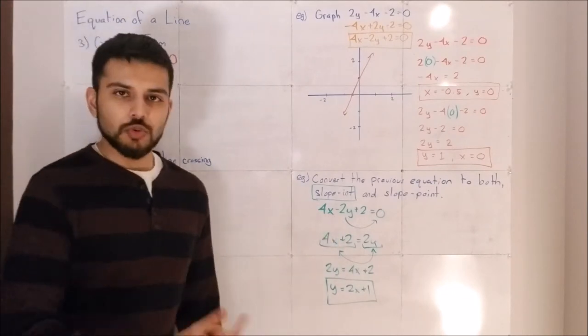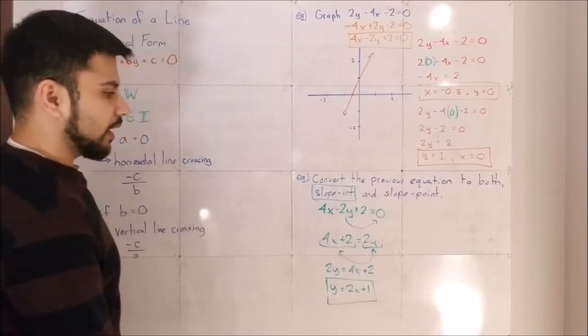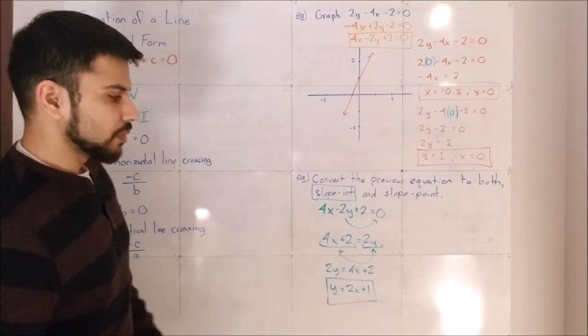It's negative 2y, so I have to add 2y to both sides to cancel them out. I'm left with 4x plus 2 equals 2y.